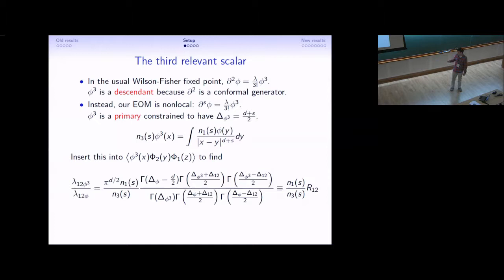We can cancel the normalization if we introduce a further two operators, three and four. Then we arrive at this remarkable formula, which tells us how infinitely many OPE coefficients in the long-range Ising model have to conspire.